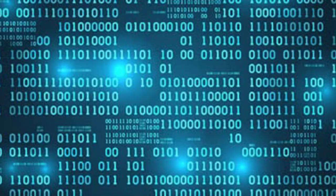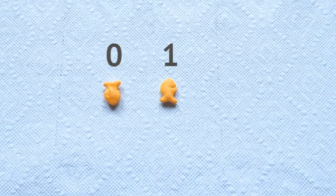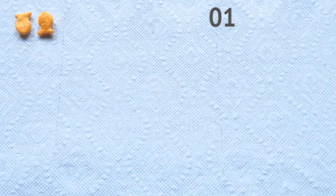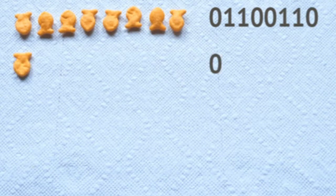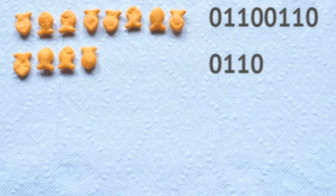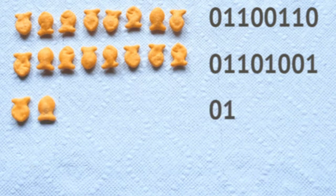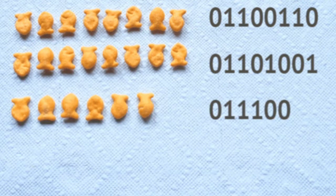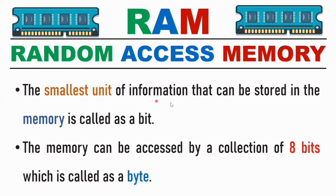If one file is stored, it is stored in binary form in memory. Data is stored as 0s and 1s — those are binary digits. The smallest unit of information that can be stored in memory is called a bit.